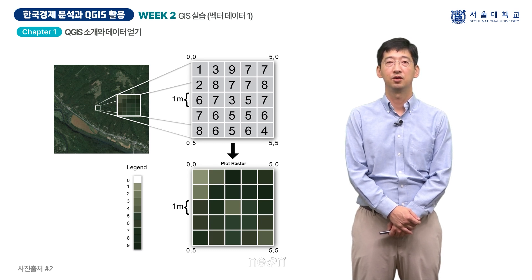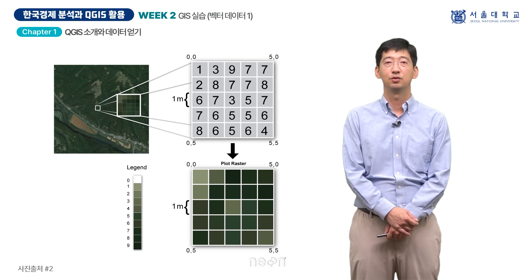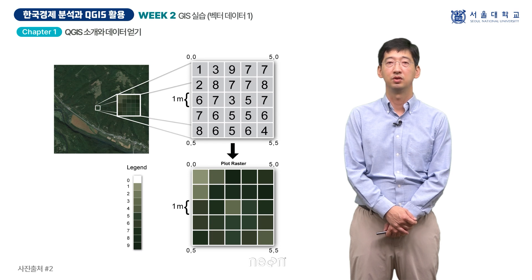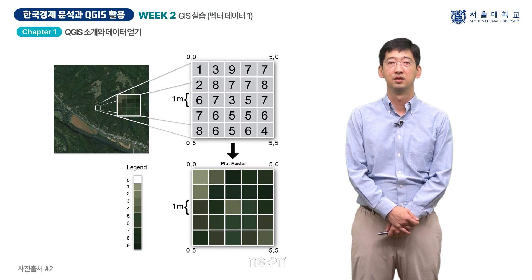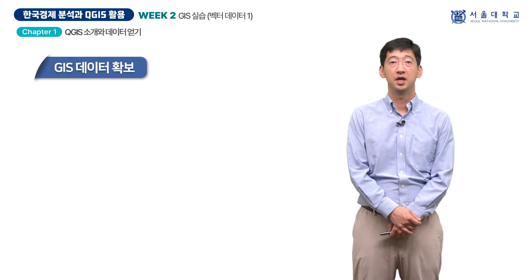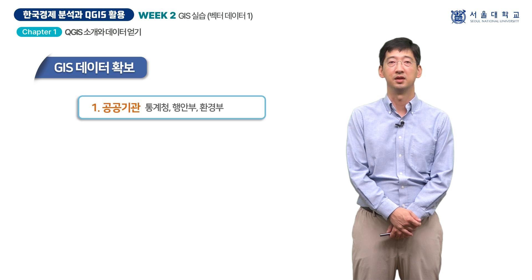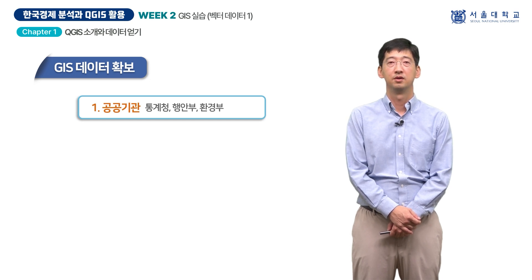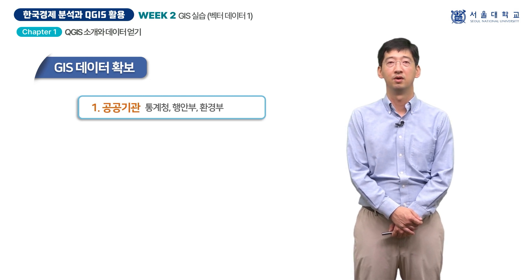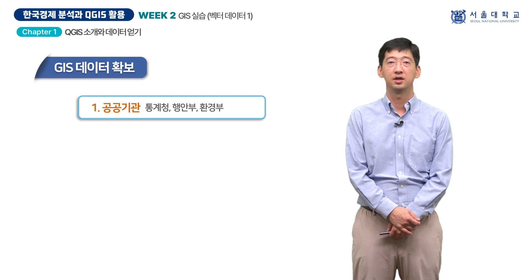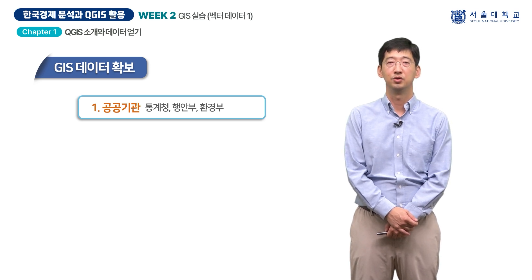GIS 데이터의 특징인 위도와 경도 같은 공간 위치 정보 덕분에 QGIS를 활용하면 특정 위치에 대한 상세한 정보를 지역 단위로 저장하거나 공간 분석 결과를 지도상에 시각화하는 것이 가능합니다. GIS 데이터는 다양한 곳에서 얻을 수 있으며, 어떤 종류의 데이터가 필요한지 알고 그에 맞는 데이터를 찾는 것이 중요합니다. 데이터의 출처에 따라 형식, 품질, 범위 등이 다를 수 있으니 주의해야 합니다.